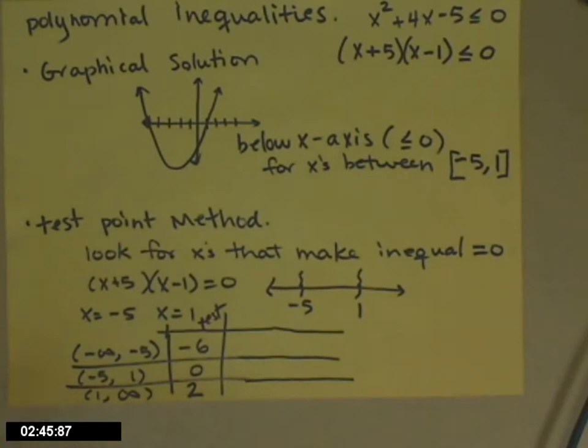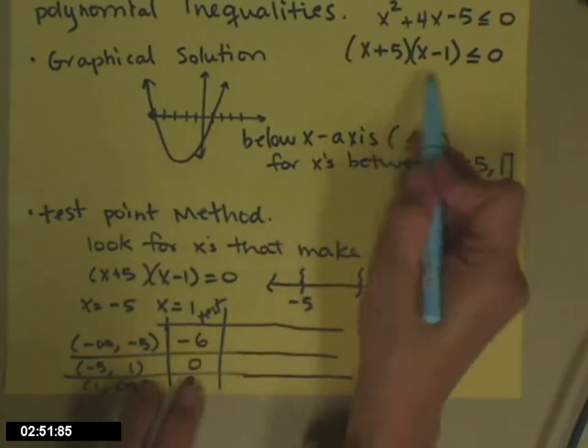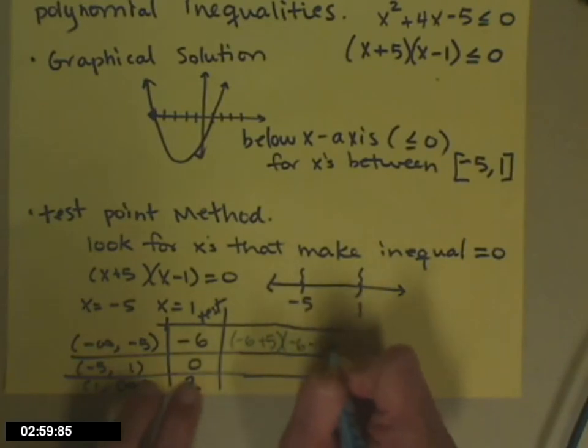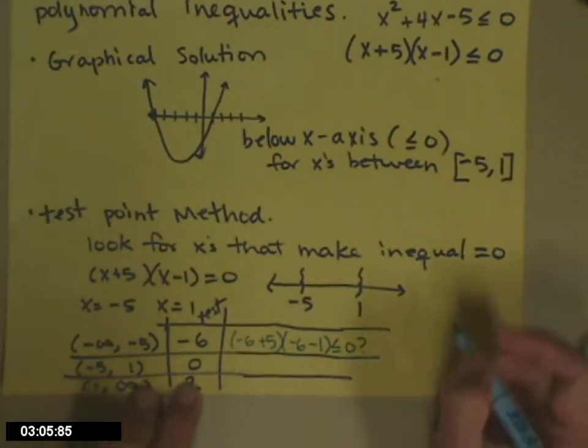And then we actually have to test it in the inequality. So checking negative six, I'm going to check it up here in the factored form. Negative six plus five times negative six minus one. Is that less than or equal to zero? So negative six plus five is negative one. Negative six minus one is negative seven.